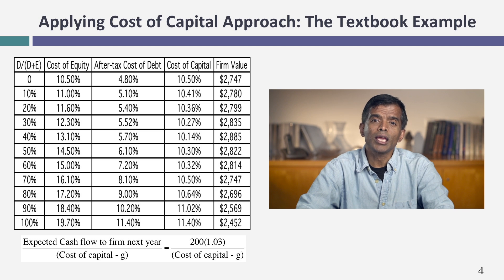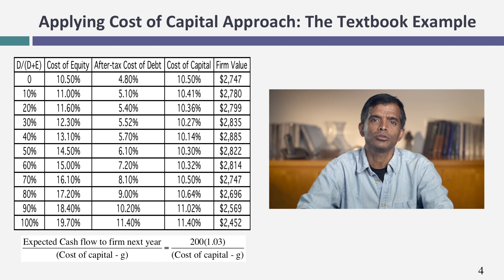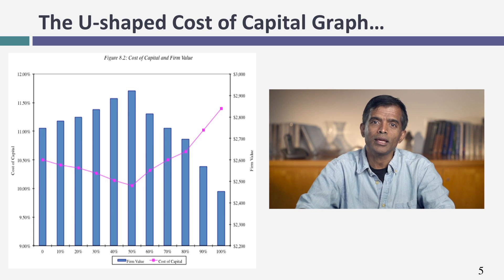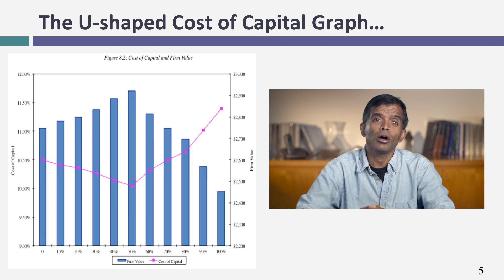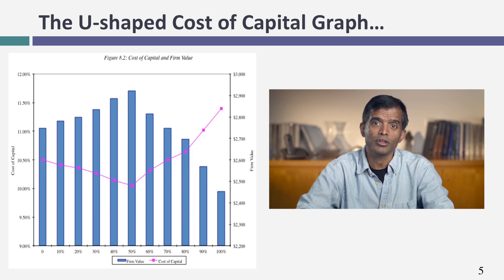To show the payoff in terms of firm value: I kept cash flows fixed — they're not affected by how much you borrow — and changed only the cost of capital. The point at which your cost of capital is minimized is also where the value of your business is maximized. Shown as a graph, you can see the value of the business peak at a 40% debt ratio — that is your optimal debt ratio. All you need to do is find the low point in the table or the high point on the graph.